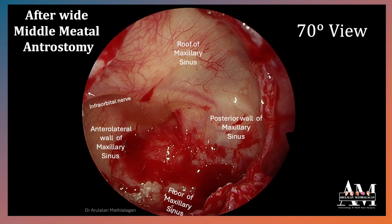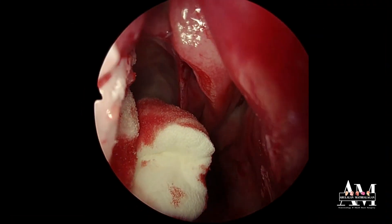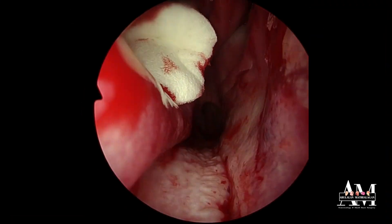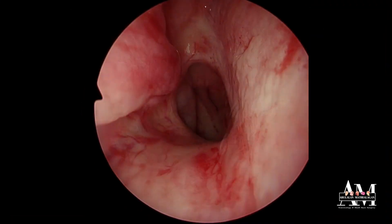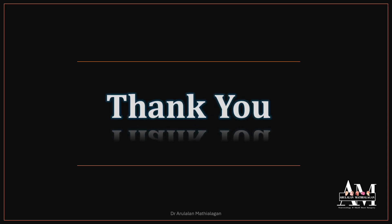That is the infraorbital nerve, and that was where the polyp was attached. After packing, this is the nasopharynx. Thank you.